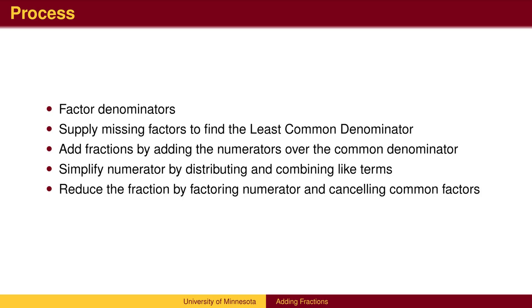Next, supply the missing factors. Fractions are then added by adding the numerators over a common denominator. The numerator can be expanded and like terms combined, which may lead to additional factoring. At this point, common factors may cancel.